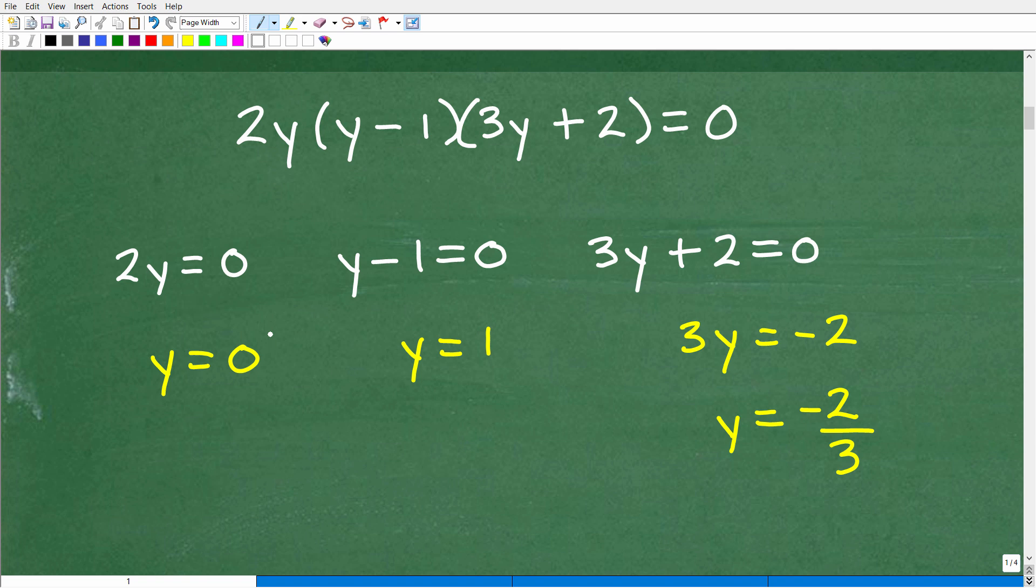So this particular equation has three solutions. Okay, one of which is y equals 0, y equals 1, and y is equal to negative 2/3. Three solutions. Now, I'm going to go ahead and tell you the name now of this type of equation. So we're talking about a polynomial equation.